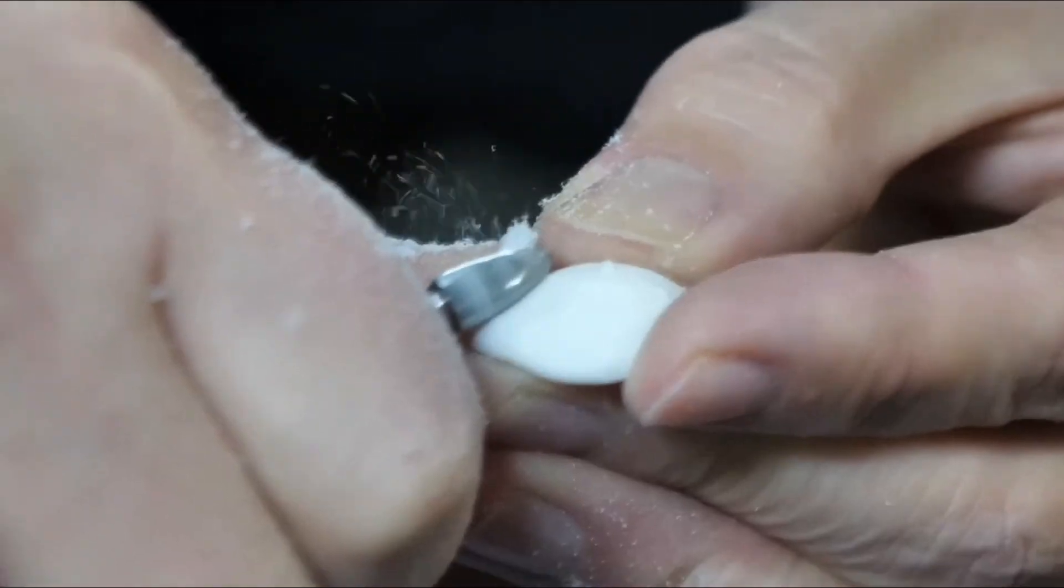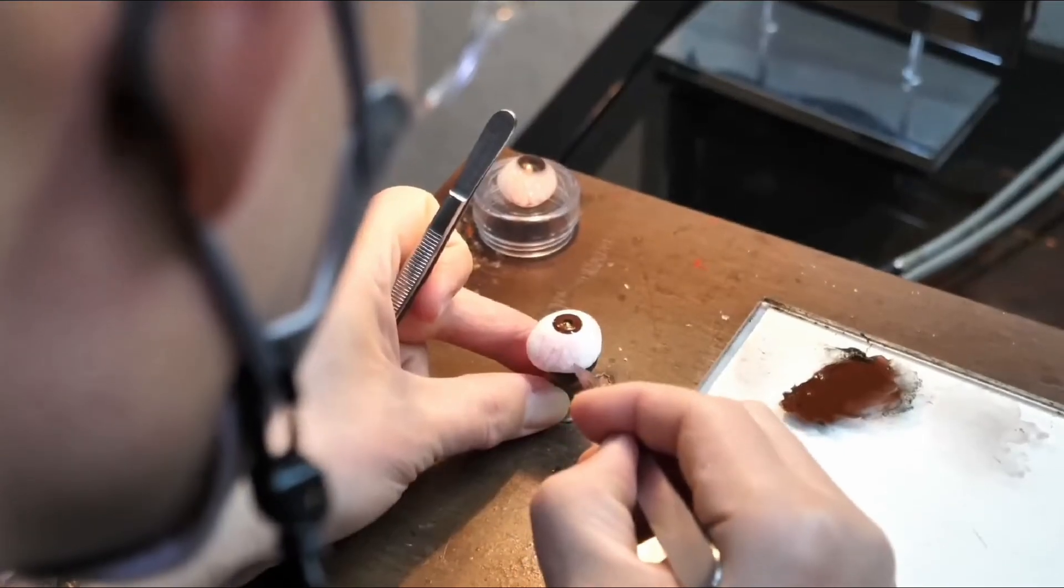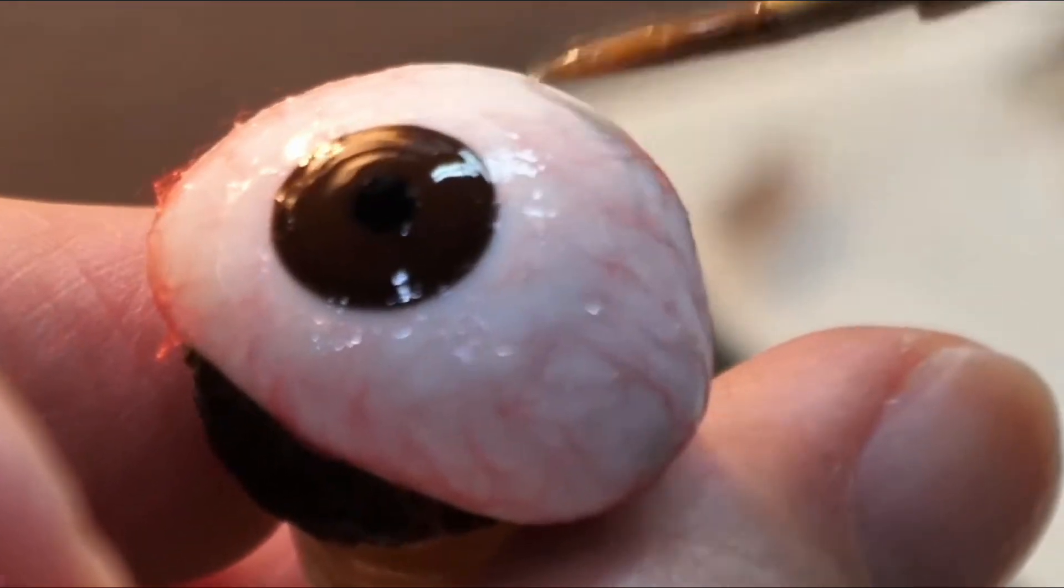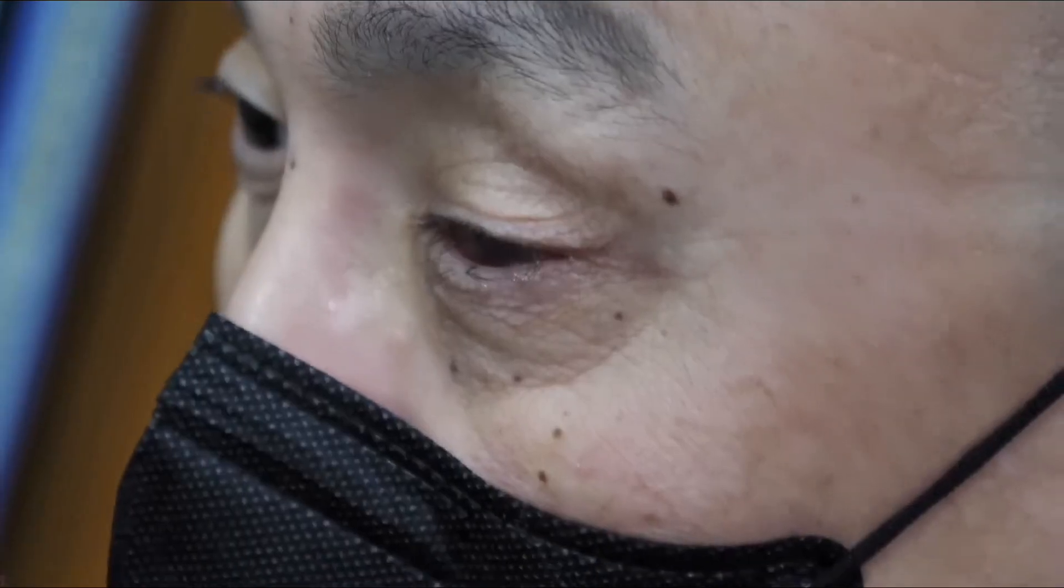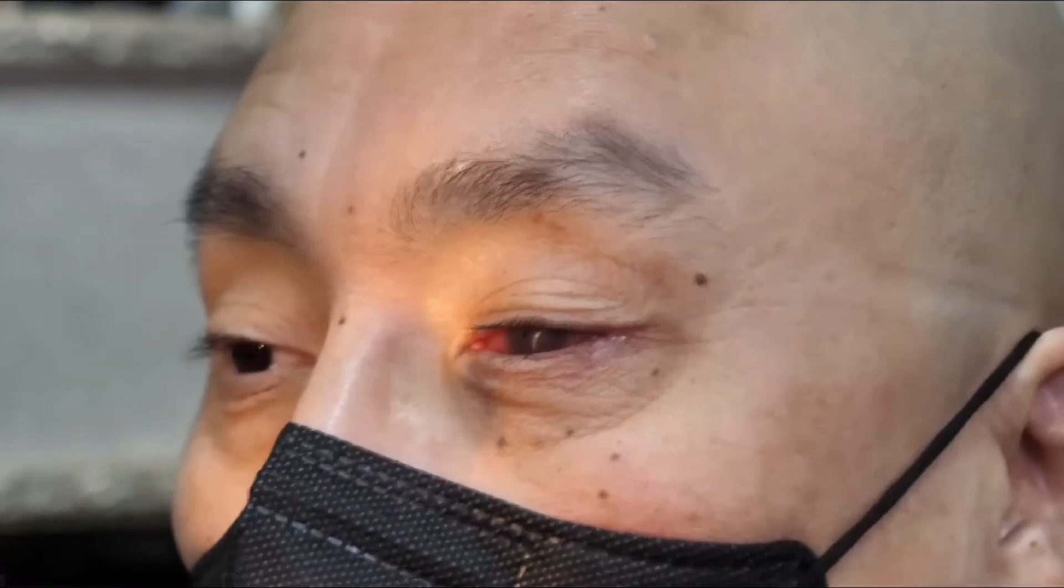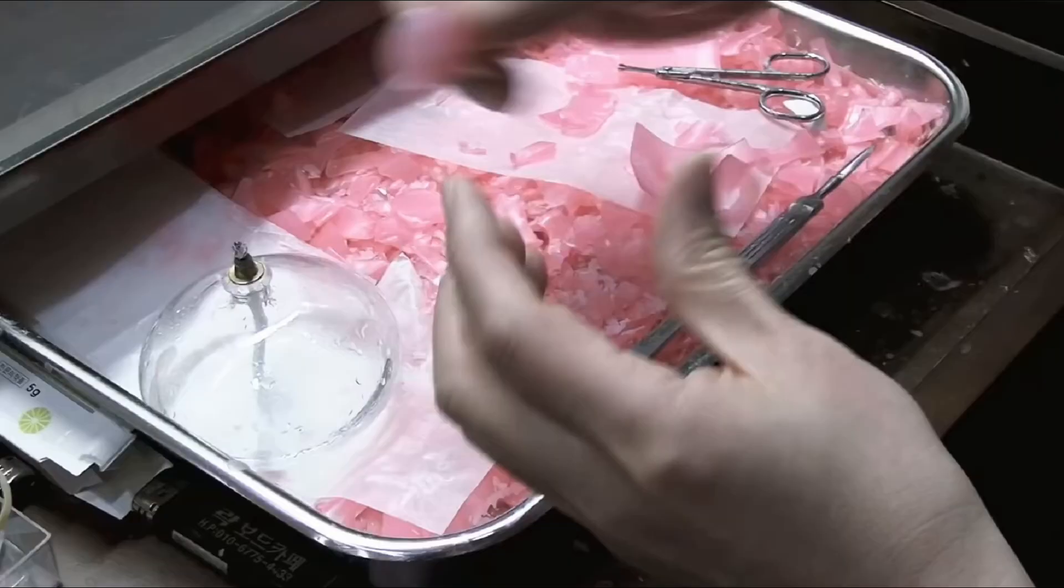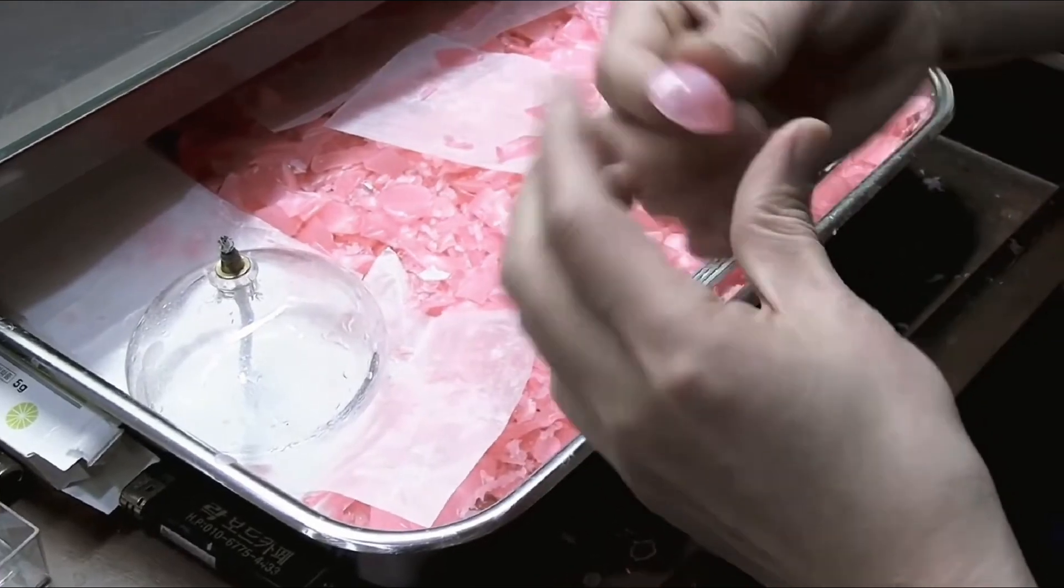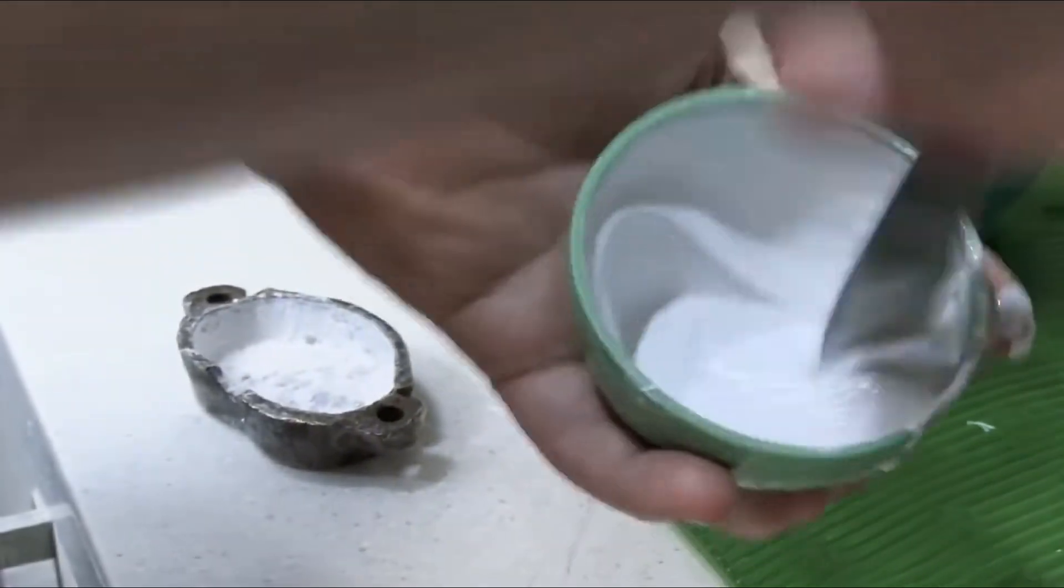The ocular prosthetic process starts with a consultation, where impressions or 3D scans of the eye socket are taken for a perfect fit. Using materials like acrylic or silicone, the ocularist sculpts and paints the prosthetic eye, meticulously recreating the natural eye's color and texture. The final step involves a fitting session to adjust the prosthesis for comfort and mobility. Regular cleaning and maintenance ensure the prosthetic eye remains functional over time.